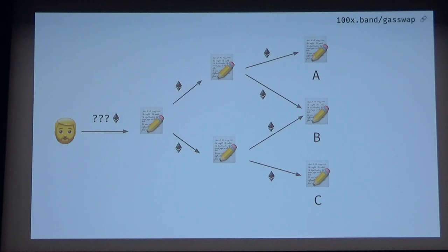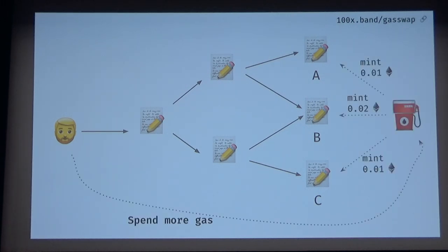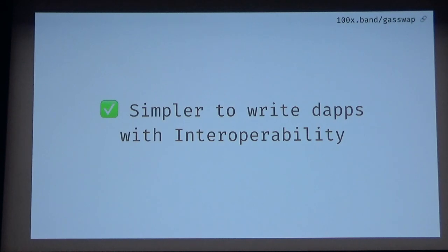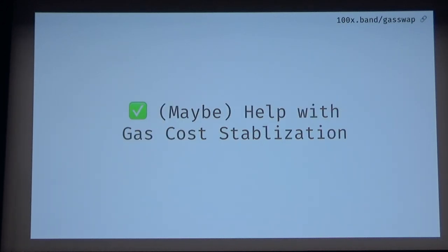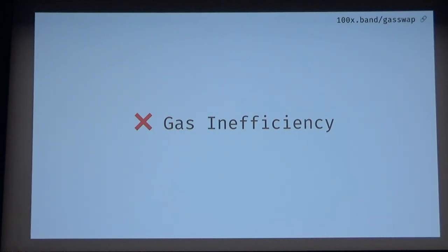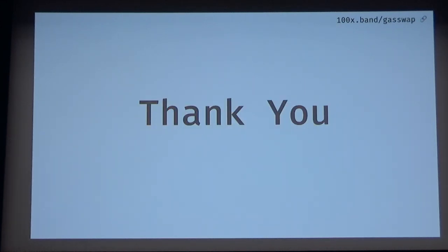Instead of Bob needing to pass around ETH, each contract can just call the mint function of GasSwap, and then there's no ETH needing to pass around, nothing needs to be payable, and Bob just pays more gas. It becomes simpler to write apps that need to pay ETH — you don't need to make everything payable, you don't need to pass ETH around. It can also help with gas cost stabilization, because with a deep market of GasToken, gas costs should become more stable. The downside is that right now it's costly to make GasToken — you pay a lot more than what you get when you refund — and it's also not future-proof, as mentioned earlier. That's it, thank you.